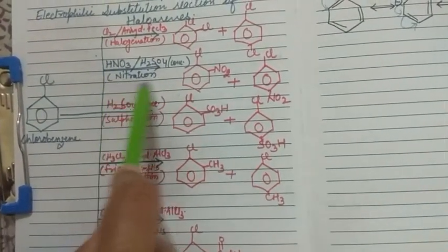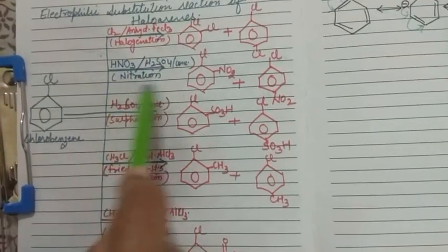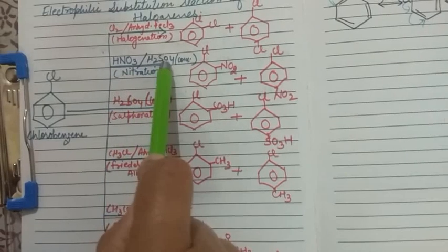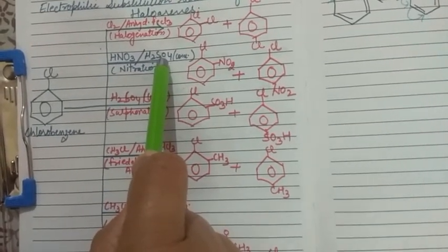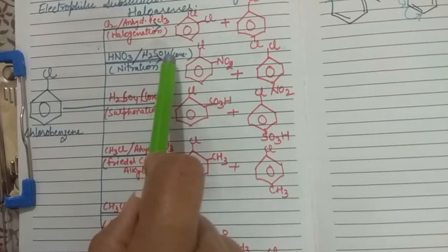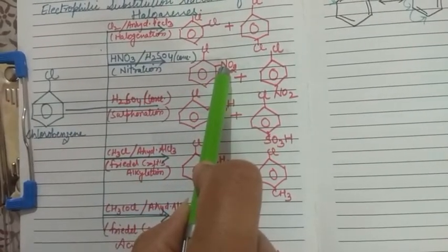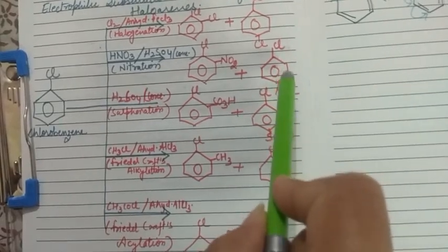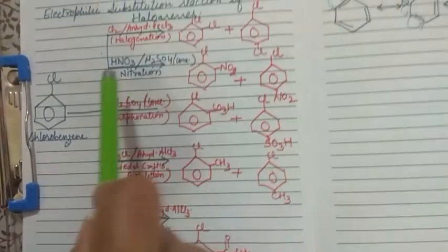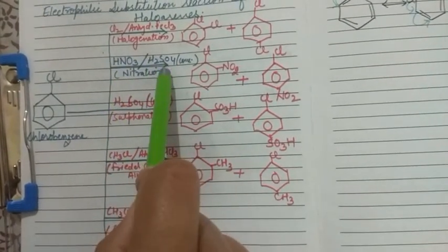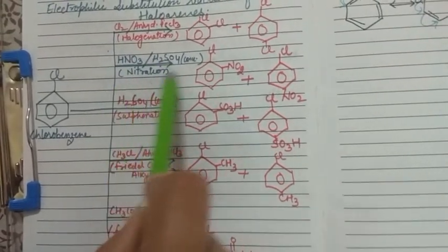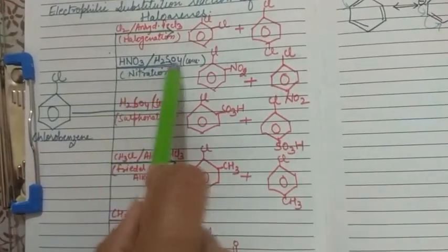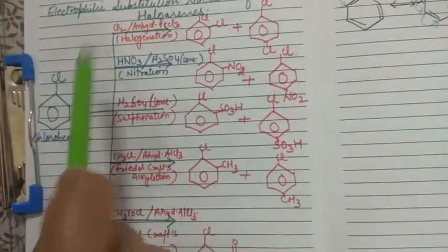The second reaction is nitration. For nitration, we will take concentrated HNO₃ and concentrated H₂SO₄. In this reaction also, we will see the NO₂ group will attack at the ortho position and the NO₂ group will attack at the para position. This concentrated HNO₃ plus concentrated H₂SO₄ mixture is used for the nitration of haloarenes.